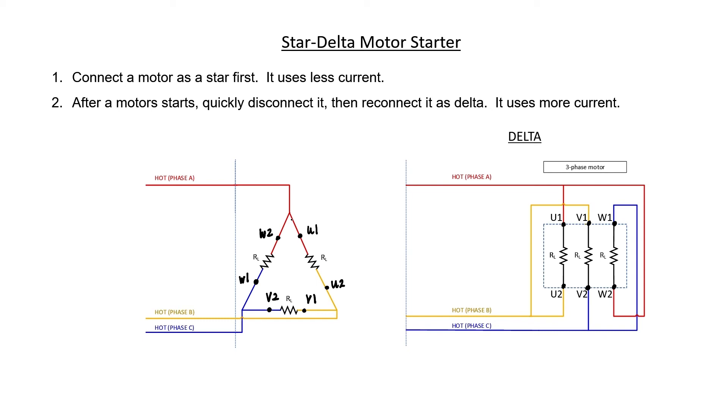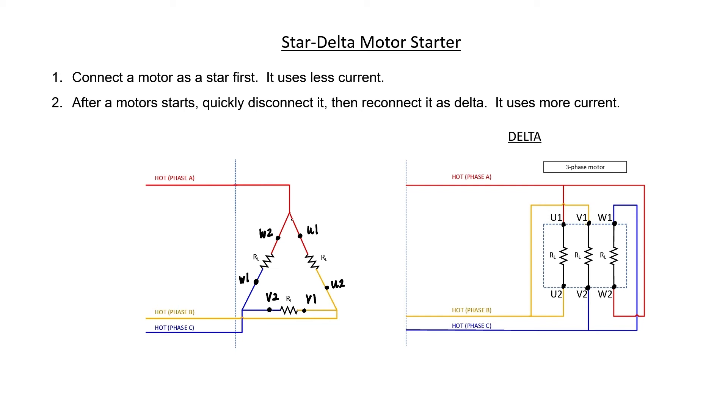These labels, U, V, and W, indicate the correct order of the phases. If you get the phases out of order, then the motor might spin in the wrong direction or not work properly.